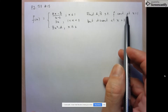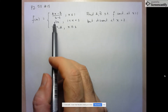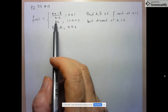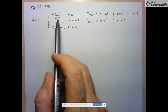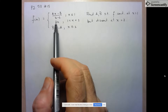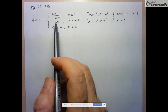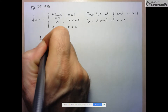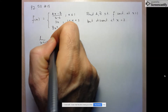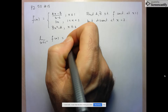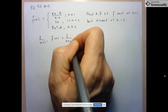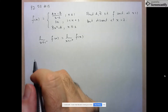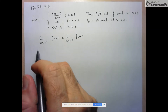We'll start with the first condition: the function has to be continuous at 1. That means the limit has to exist at 1. Because that's where the equation changes, I'm going to think of it in terms of one-sided limits. I need the limit as X approaches 1 from the left of F at X to equal the limit as X approaches 1 from the right of F at X. That's one of the conditions of continuity.